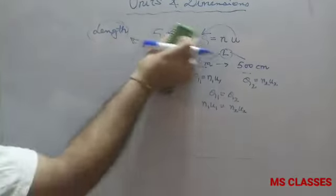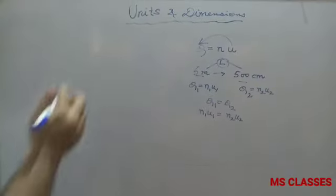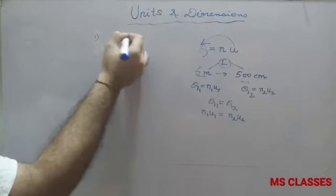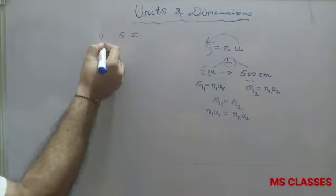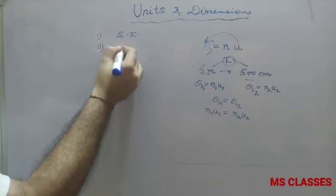Now, we have four systems of units. The first system is SI, which is the Standard International system of units, applicable throughout the globe - like Newton, Joule, etc.